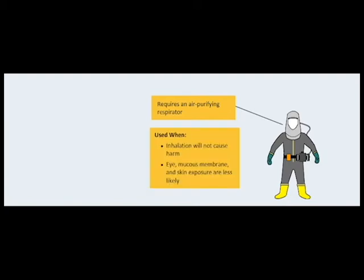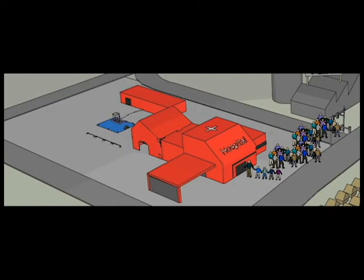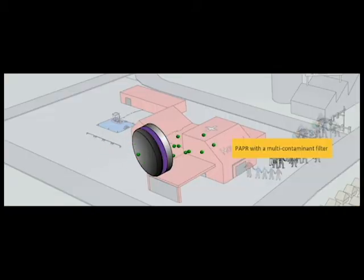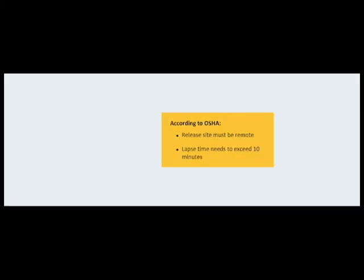This ensemble is used when the inhalation risk is known or anticipated to be below a level that would cause harm to personnel and when eye, mucous membrane, and skin exposure are less likely. In a chemical mass casualty incident where the identity of the offending agent may be unknown, a PAPR with a multi-contaminant filter can be used under certain circumstances. According to OSHA, the release site must be remote from the hospital and the lapse time between the victim's exposure and arrival to the hospital needs to exceed 10 minutes.